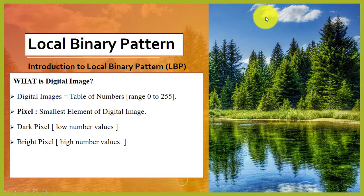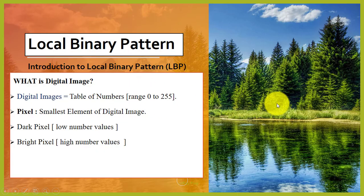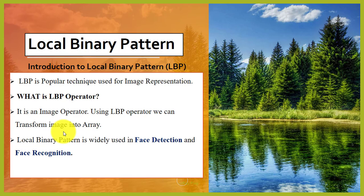The pixel value range is from 0 to 255. A pixel is the smallest element of a digital image. We have dark pixels and bright pixels. Low number values are considered as dark pixels and high number values as bright pixels.